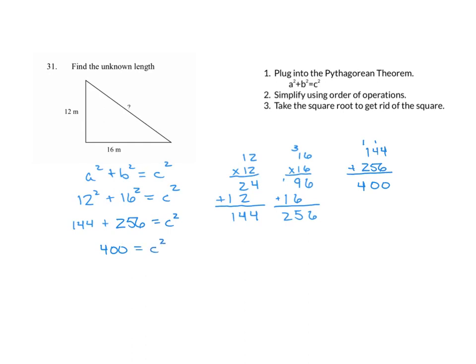Equals c squared. And now if we take the square root, what times itself equals 400? And the answer is 20. So we get c equals 20 meters.